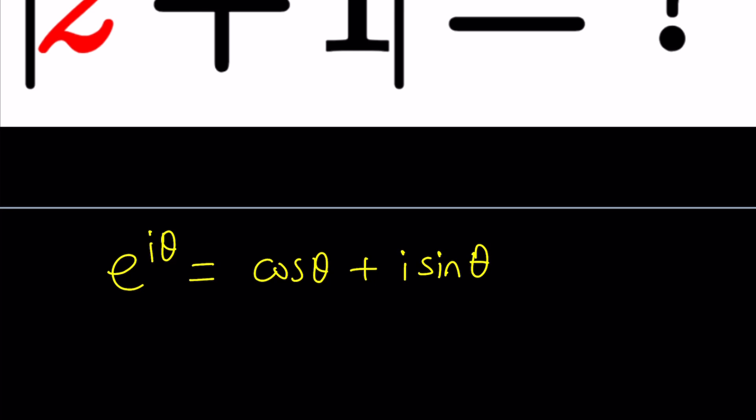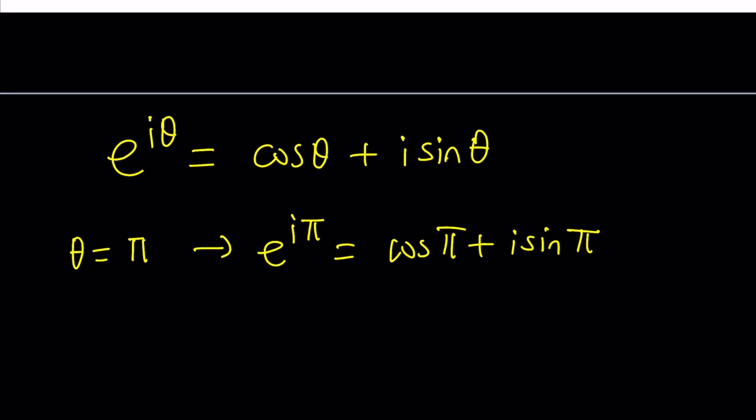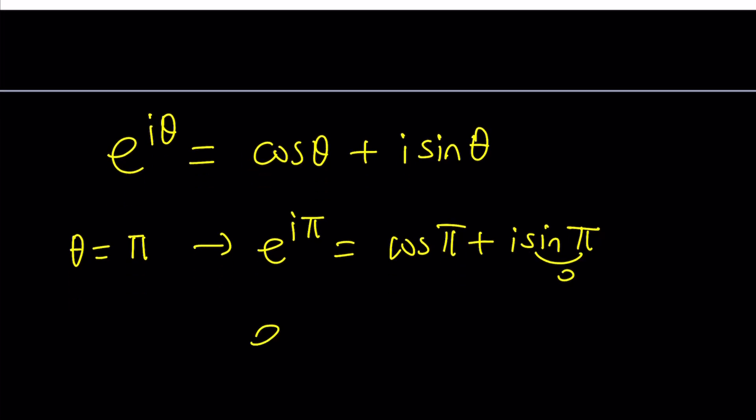And obviously if you replace theta with certain values like pi, pi over two, negative pi, you're going to get amazing identities. One of which is basically if you replace theta with pi for example, you're going to get e to the i pi equals cosine pi plus i sine pi. And then since cosine pi is negative one and sine pi is zero, we can write this as e to the i pi equals negative one. Isn't that beautiful? It's just amazing.